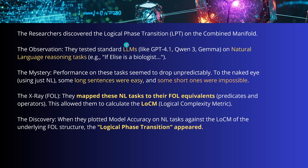Here's how they did it: they started with an LLM — GPT, Qwen, a Gemma model — on a natural language reasoning task. Performance dropped sometimes unpredictably. To the naked eye, some of the longest sentences were easily solved while some shorter ones were almost impossible for some LLMs. The authors then mapped the natural language tasks to their first-order logic equivalents — predicates and operators — and calculated the LOCM. When they plotted model accuracy against the LOCM of the underlying FOL structure, the logical phase transitions appeared.